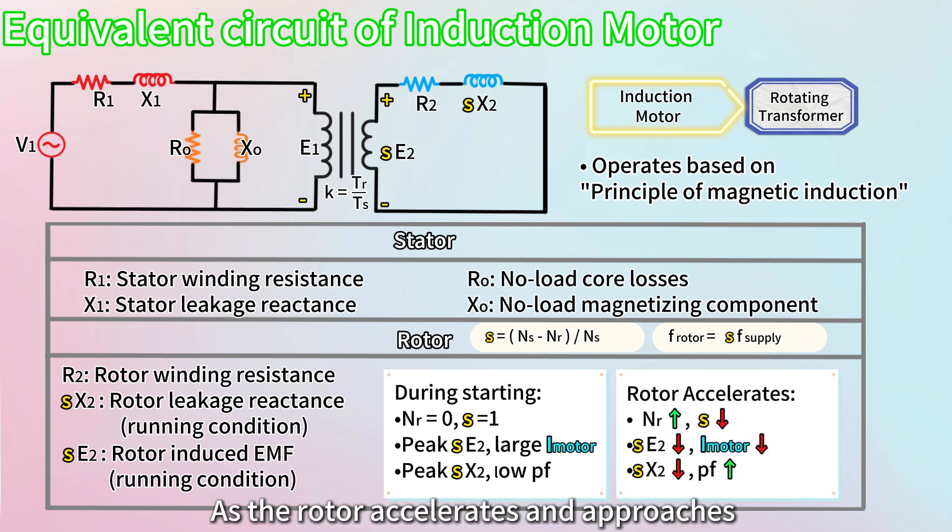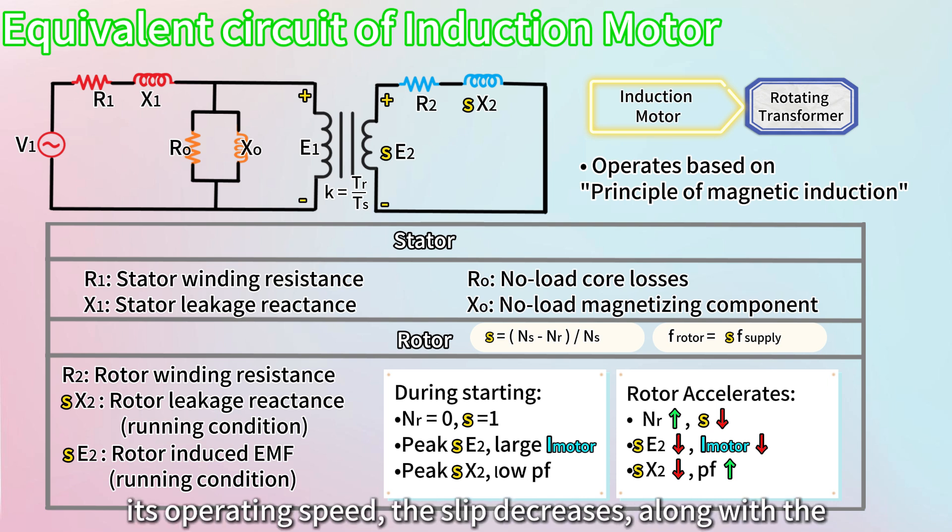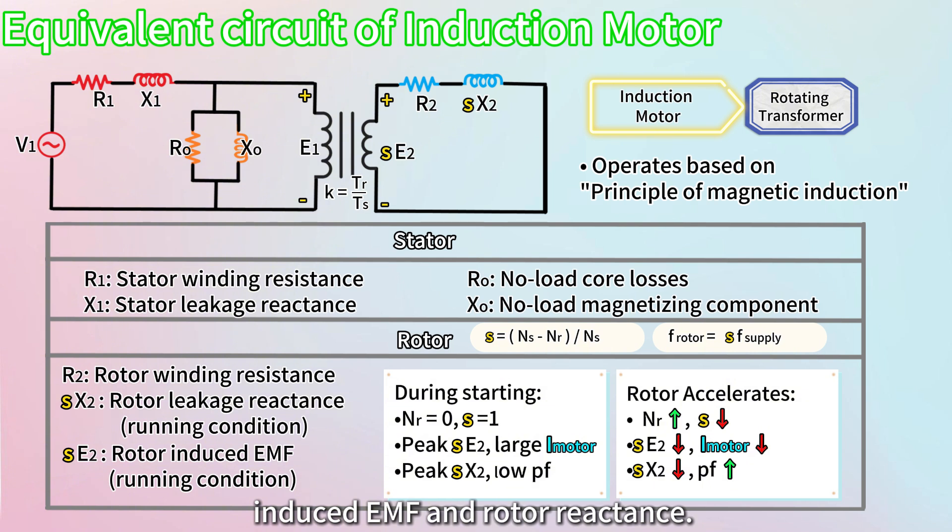As the rotor accelerates and approaches its operating speed, the slip decreases along with the induced EMF and rotor reactance. This results in a decrease in current and an increase in power factor.